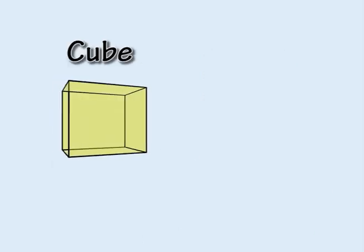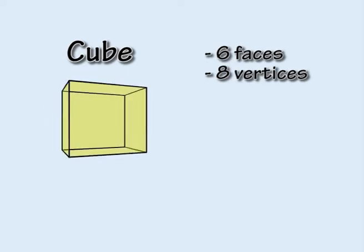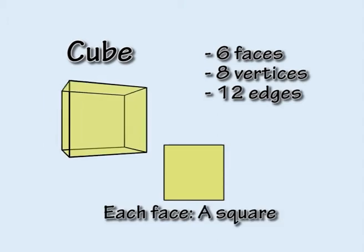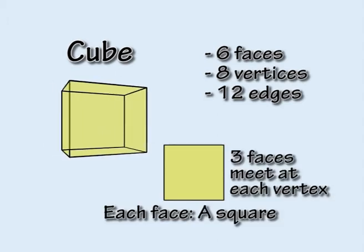The cube has six faces, eight vertices, and twelve edges. Each face is a square, with three square faces meeting at each vertex.